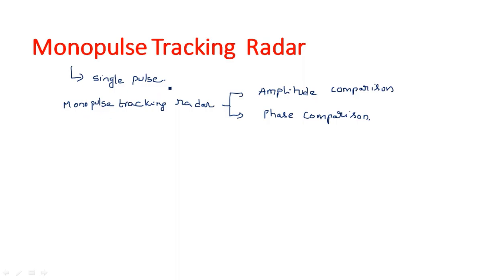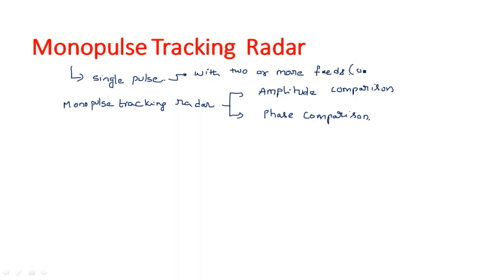The single pulse is transmitted with two or more feeds. In previous methods like conical scan or sequential scan, we used one single antenna with one feed and multiple pulses. In monopulse tracking radar, we use a single pulse from each feed — one feed per one pulse — so with multiple feeds we can use multiple pulses.